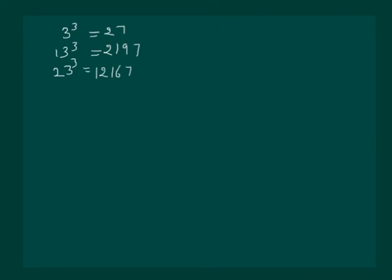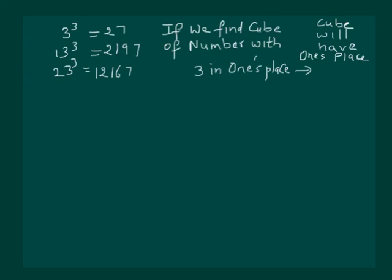Similarly, if we cube the numbers with 3 in the 1's digit, we see that 3³ = 27, 13³ = 2197 and 23³ = 12167. 7 was there in the 1's digit for 3³ and that 7 gets repeated in all the numbers with 3 in the 1's place. We can say that if we find cube of a number with 3 in 1's place, then cube will have 1's place as 7.